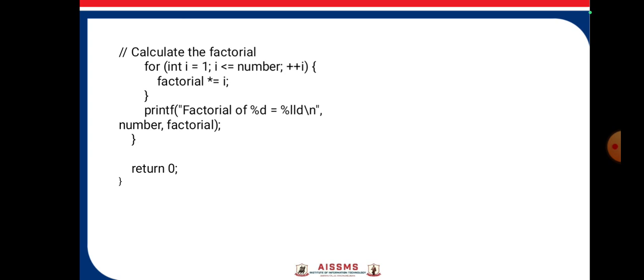Multiply factorial by each number from 1 to the number entered by the user. Then print the calculated factorial value and use return 0 for successful execution of the program.